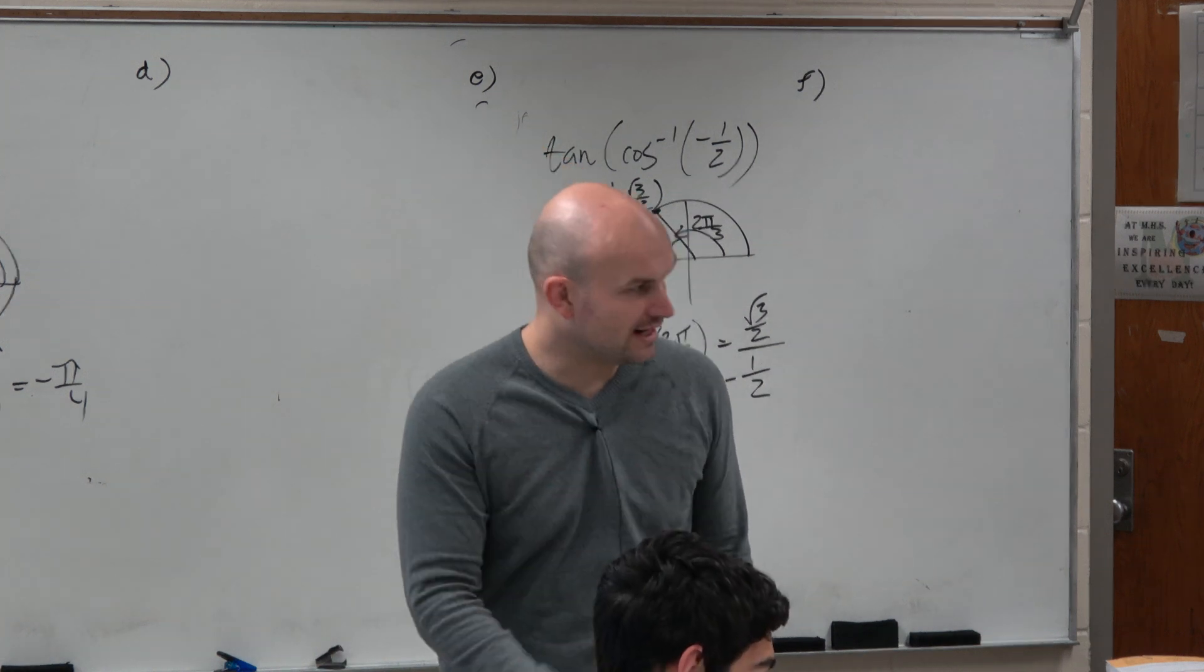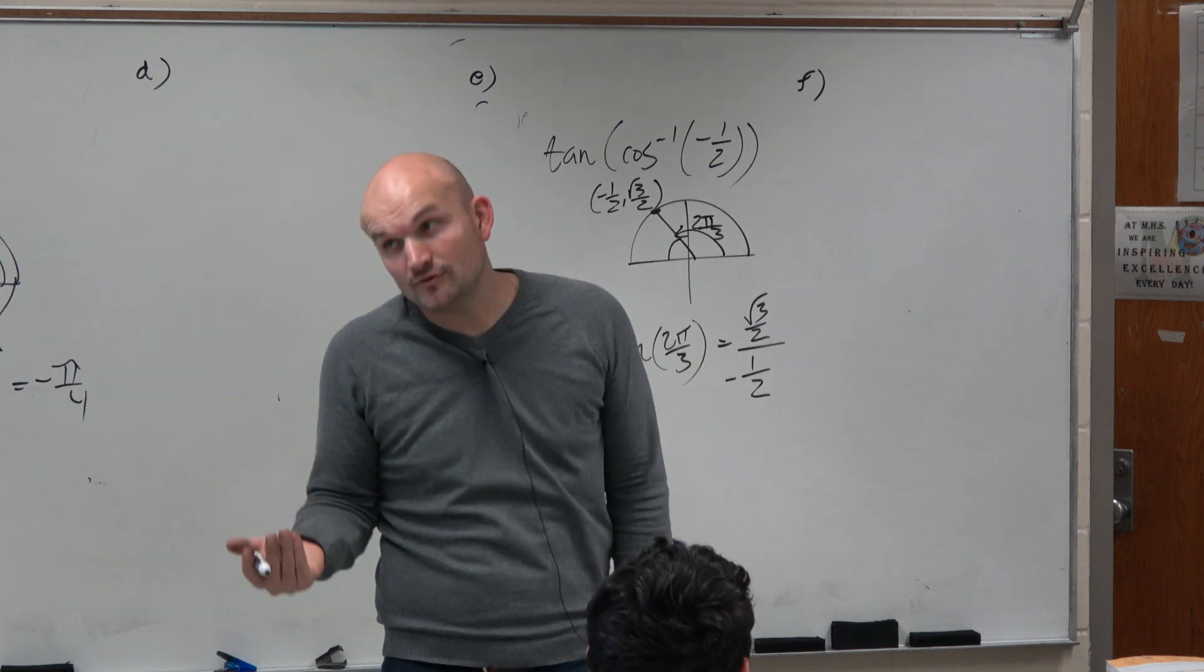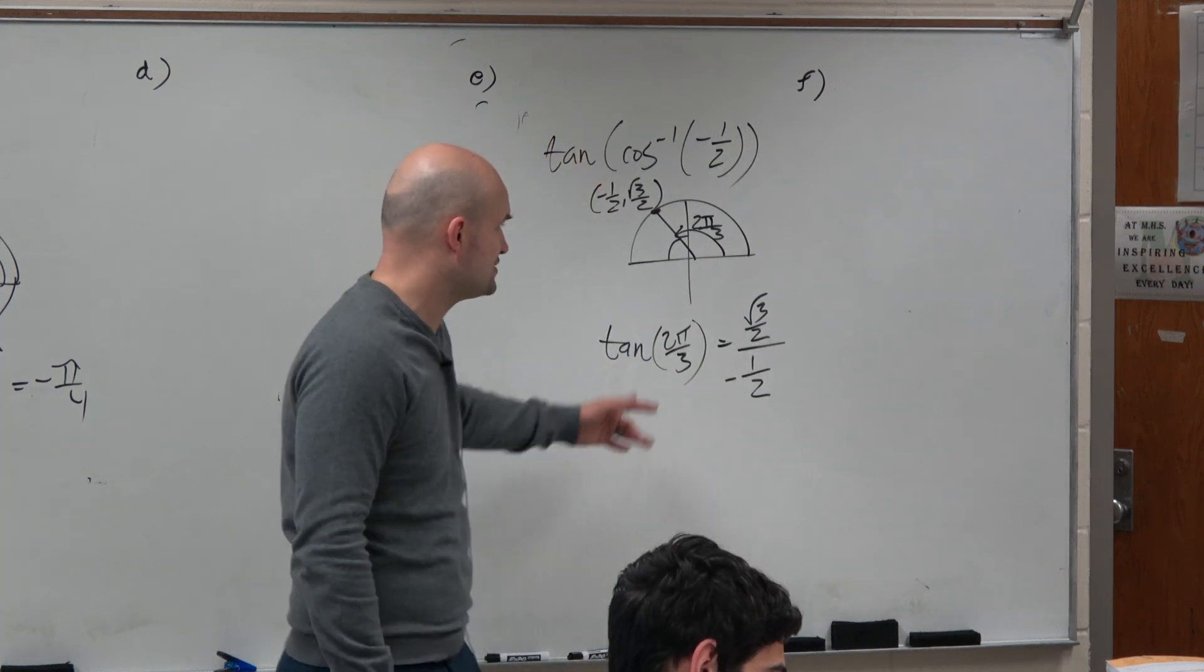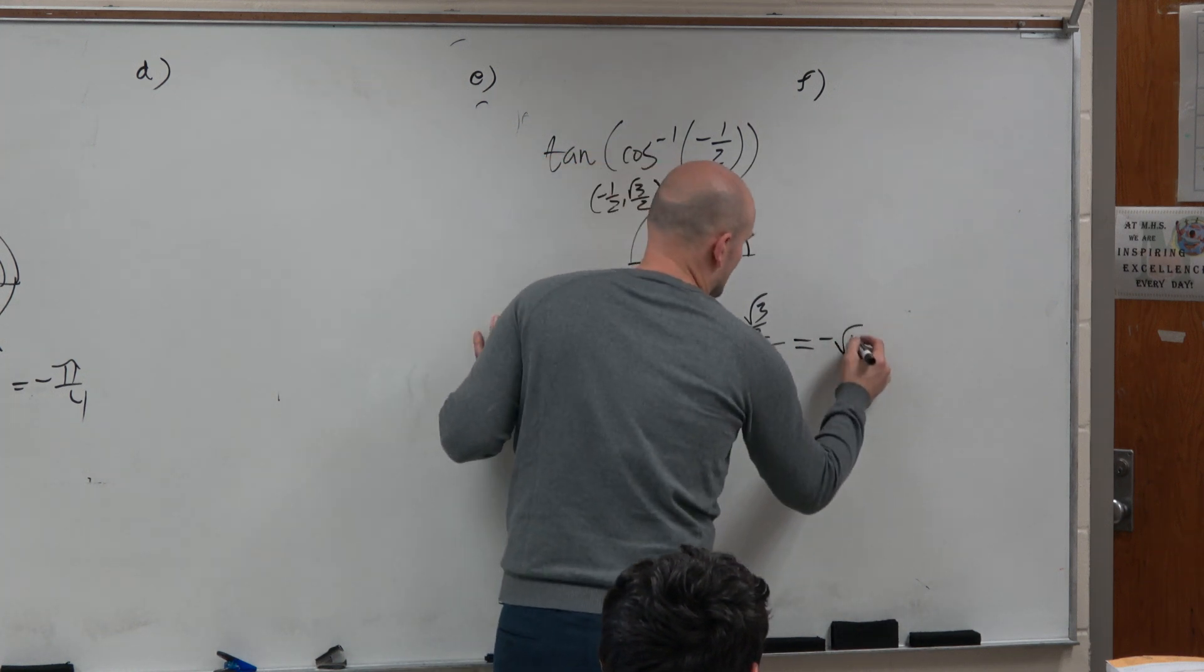Now, I could multiply by my reciprocal on the top and the bottom and then simplify it. But hopefully, I have practiced this enough, and I just realized that this is going to give me a simplified answer of the square root of 3.